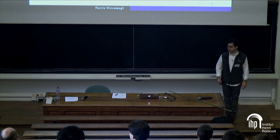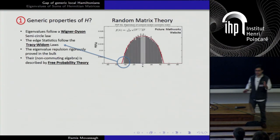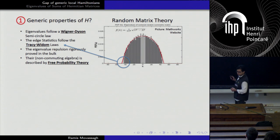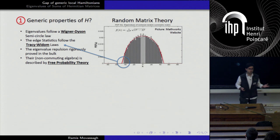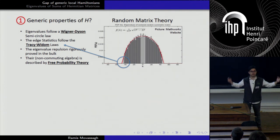Generic local Hamiltonians are gapless. When you have a generic operator, you can ask questions. The first questions are: what do we know about their eigenvalues and eigenvectors? Throughout this talk, everything is going to be Hermitian. We know about the Wigner semicircle law, which plays the role of the central limit theorem. We know that even the edge statistics are governed by Tracy-Widom laws. It's mostly pure mathematics these days, about working with really dense large random matrices and understanding their statistics.